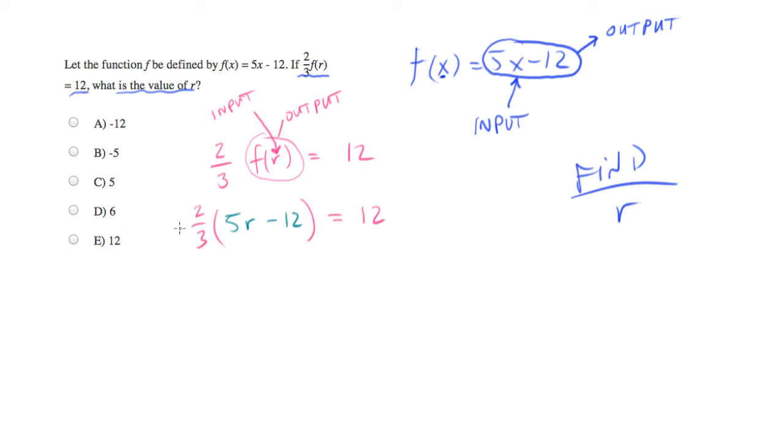Let's multiply both sides by three. And we'll end up with two times 5r minus 12 equals 36.